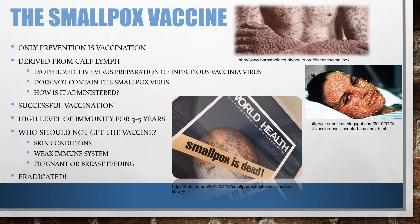Who should not get the vaccine? People with eczema or atopic dermatitis, burns, chickenpox, shingles, impetigo, herpes, severe acne, or psoriasis should not get the vaccine until their illness has cleared up. Anyone with a weakened immune system — due to cancer treatment, organ transplant, HIV, or medications for autoimmune disease — should not get this vaccine. The elderly, very young babies, pregnant women or those planning pregnancy within one month, and breastfeeding women should also not be vaccinated.